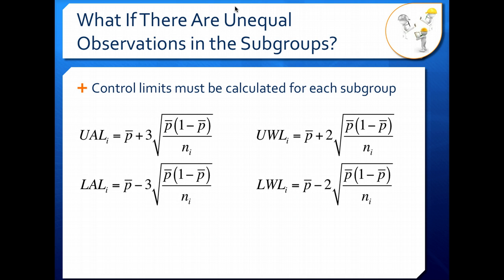Let's look at our control limits and how they're calculated. The formulas look the same as for equal subgroups of p-charts. The only difference is this little i right here.